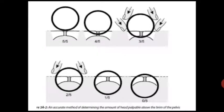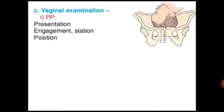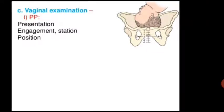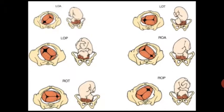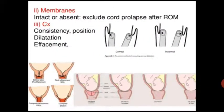This diagram shows the method of determining the amount of head palpable above the brim of the pelvis. Vaginal examination includes assessment of presentation, engagement, station, and position. We examine the fetal head and presenting part, and check the membranes — whether intact or absent.